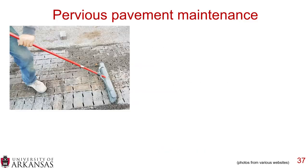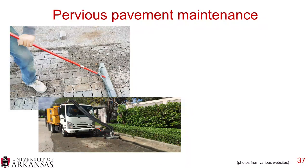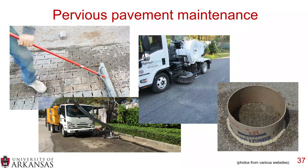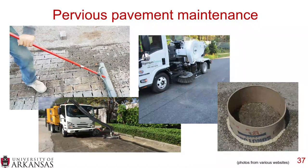Looking at maintenance pictures: coarse aggregate being swept into a PICP surface, a vacuum removing fines from a pervious surface, a traditional paving broom being used, and an example of a pervious infiltration test where a known area is sealed at the edges, filled with water, and timed to see how long it takes to drain into the pavement structure. There needs to be some minimum infiltration rate for the pervious pavement to work as designed.